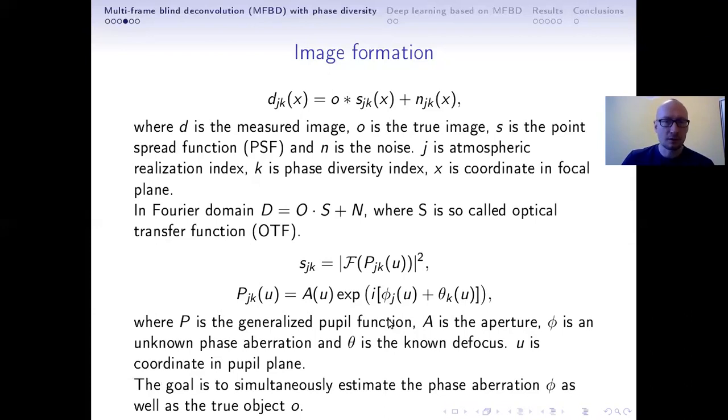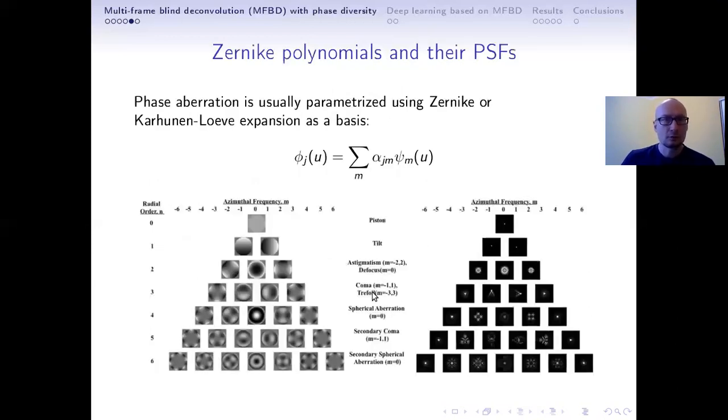The goal is simultaneously to learn the unknown object and also this unknown wave front. To be able to do that, one has to parameterize this wave front. So usually, either Zernike or Karhunen-Loève expansion is used as basis. In our later tests, we use the Karhunen-Loève expansion, which makes the coefficients independent under the Kolmogorov turbulence assumption.